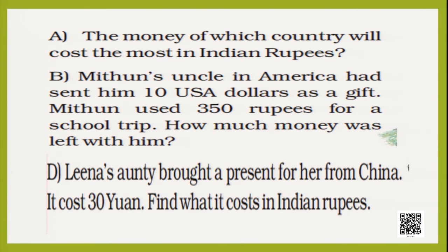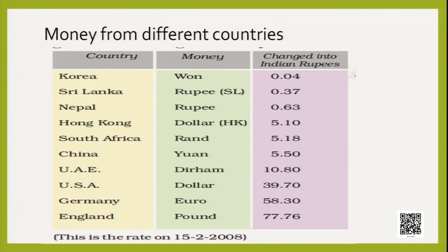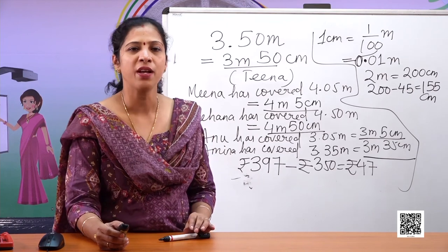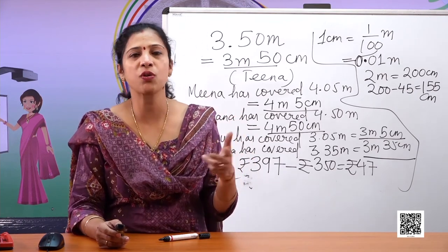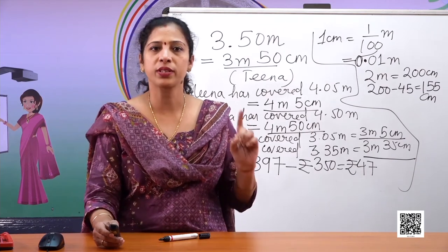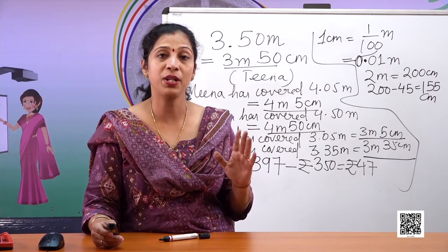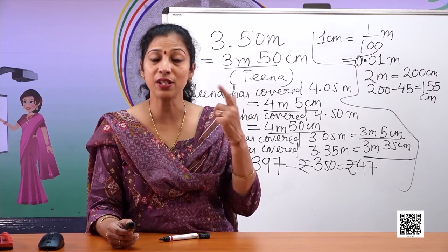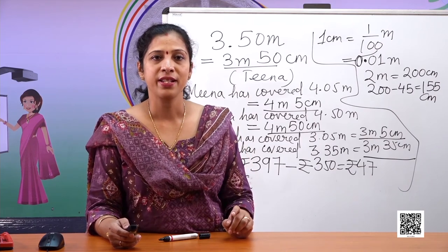Lena's aunt bought her a present from China costing 30 yuan. Since 1 yuan equals 5 rupees 50 paise, you can find the total cost in Indian rupees by multiplying 30 by 5.50. Try calculating this on your own, either by multiplying or by working it out mentally.